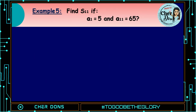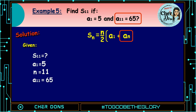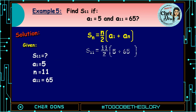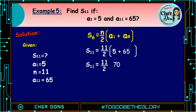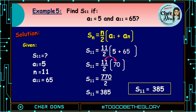Example number 5: Find S of 11 if a sub 1 is 5 and a sub 11 is equal to 65. Given: S of 11 is unknown, a sub 1 is 5, n is 11, a sub 11 is 65. Applying the formula: S of n is equal to n over 2 multiplied by (a sub 1 plus a sub n). We use this formula because the last term is given. Where 5 goes to a sub 1, 11 goes to n, 65 goes to a sub n. S of 11 is equal to 11 over 2 times (5 plus 65), that is 70. Multiplying 11 by 70 gives 770, then 770 divided by 2 equals 385. Therefore, the sum of the first 11 terms is 385.